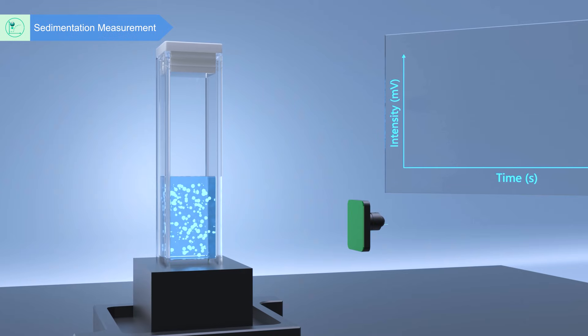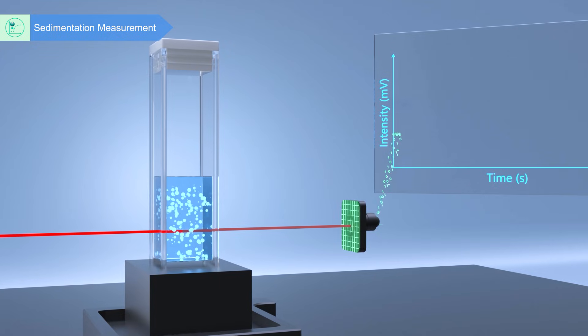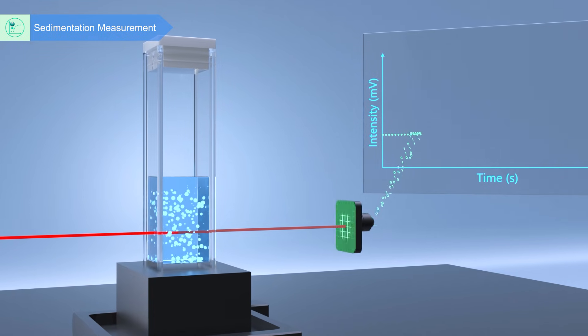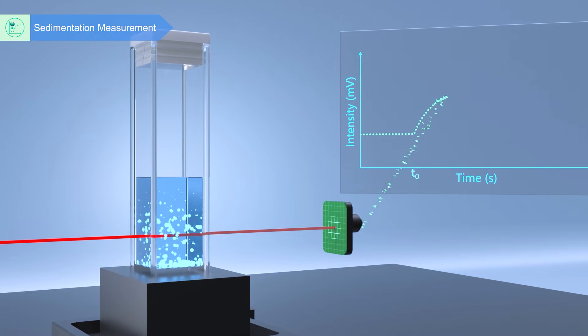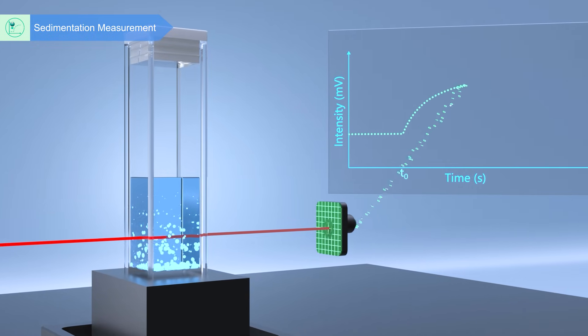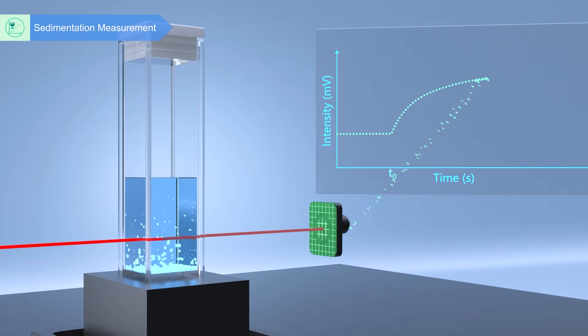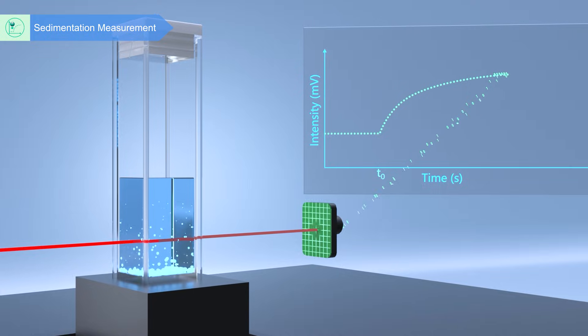The Bnano sedimentation test uses a PD detector set at the angle of zero degree. It obtains information about particle size and size distribution by detecting changes in the intensity of transmitted light caused by the particle sedimentation.